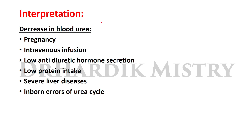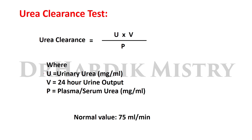Conditions in which blood urea level is decreased include pregnancy, intravenous infusions, low antidiuretic hormone secretion, low protein intake, severe liver disease, and inborn errors of the urea cycle.